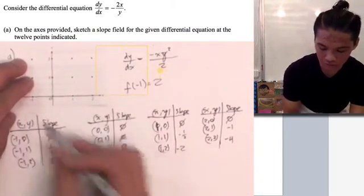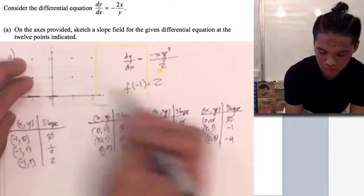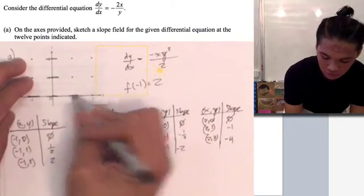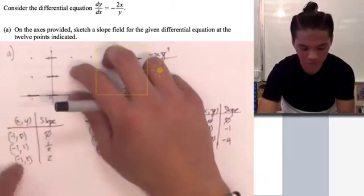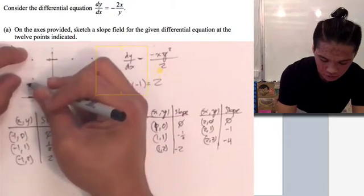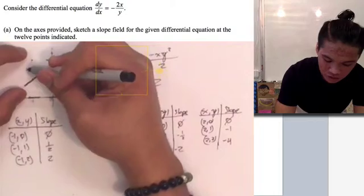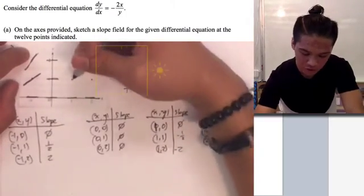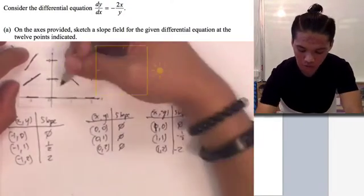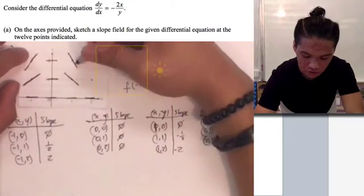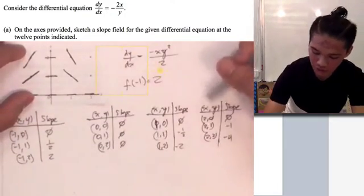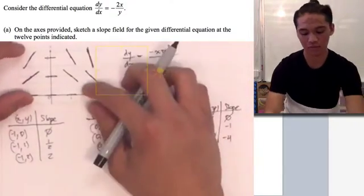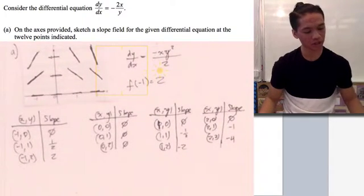Now we can go ahead and start plotting the slopes. At negative 1 comma 0, the slope is 0. At 0 comma 0, 0 comma 1, and 0 comma 2, the slopes are all 0. At 1 comma 0 and 2 comma 0, slopes are 0 as well. For negative 1 comma 1, we have a positive, more shallow slope, and negative 1 comma 2 is a steeper positive slope. For x equals 1, we have the reverse of the negative 1 values. At x equals 2, we have negative slopes — 2 comma 1 is about like that, and 2 comma 2 is even steeper. That's how we sketch the slope field.